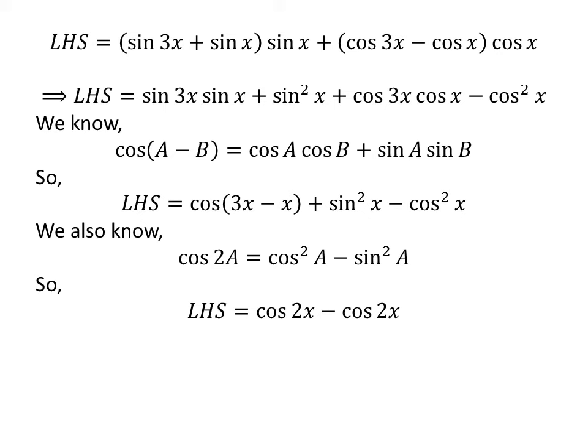So, the application of the above identity gives us the left hand side of the equation is equal to cosine of 2 times x minus cosine of 2 times x.